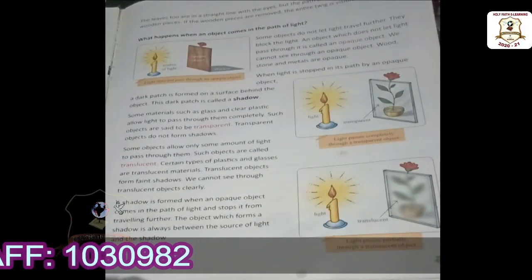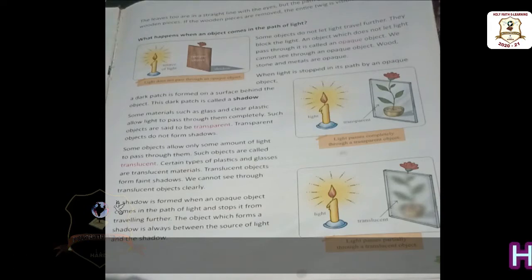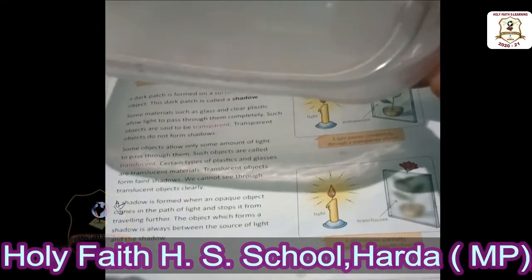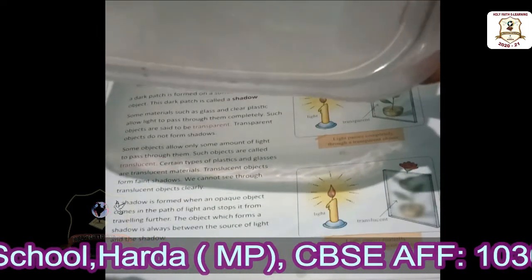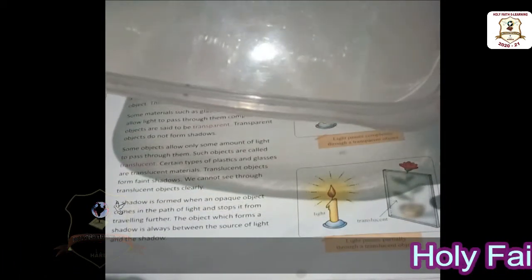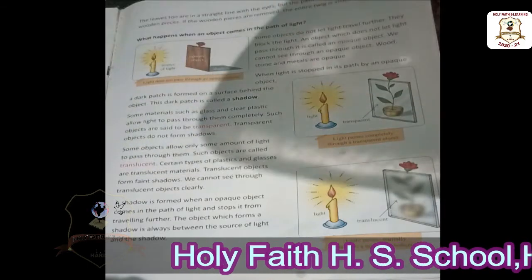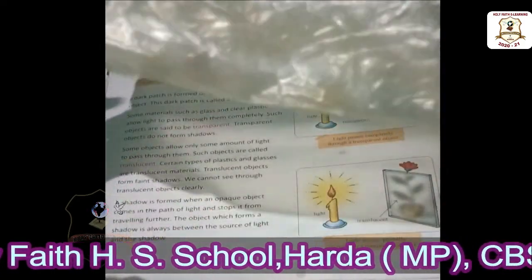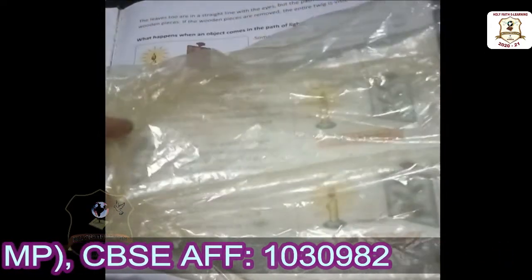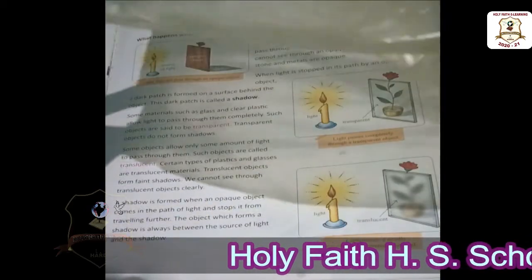Now let us learn about translucent objects. Some objects allow only some amount of light to pass through them. These types of objects are called translucent objects. Certain types of plastic and glass are translucent — like colored plastic or colored glass. We can see things through them but it is not clear. Translucent objects form faint shadows — not dark shadows, but light shadows.